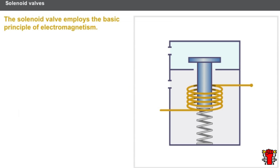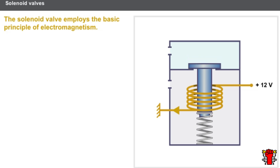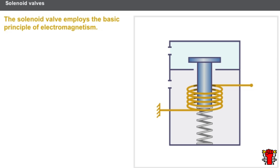Another type of actuator is the solenoid valve. The solenoid valve employs the basic principle of electromagnetism. A current passes through the coil of the controlled circuit. The coil's magnetic field attracts the core. The core, integral with a check valve, moves, possibly closing a pneumatic or hydraulic circuit. Return to brake position is performed by a spring.